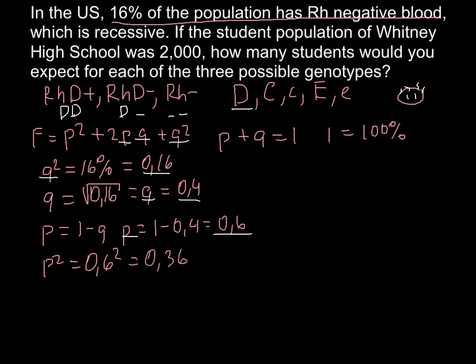So here we have this number. And now we have to calculate number of the heterozygous. And this would be 2pq. And this means that 2 multiplied by number p, that is 0.6, and multiplied by number q, that is 0.4.